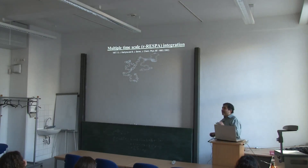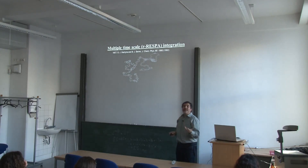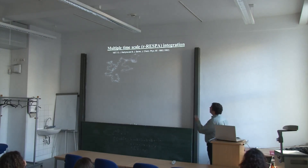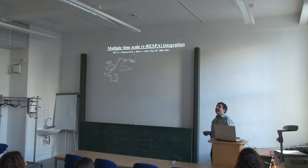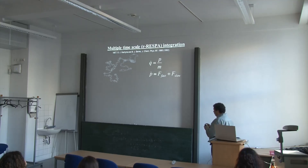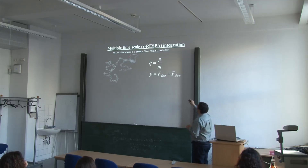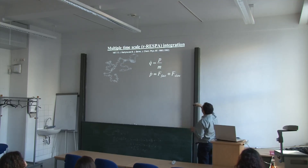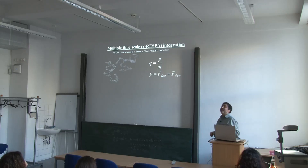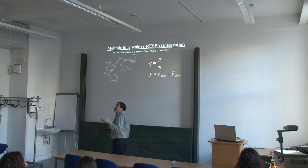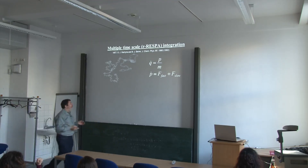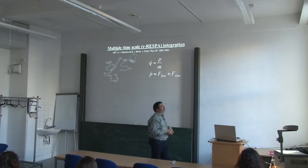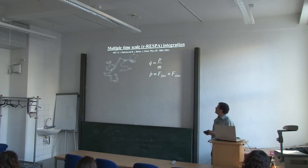This operator approach leads directly to multiple time step methods. For a molecule with bonds, bends, and dihedral angles, suppose the force has two contributions: a fast part — bond stretching, angle bending, and dihedral motion — and a slow part — intermolecular dispersion and Coulomb forces. These operate on very different timescales, which is exactly what multiple time stepping exploits.